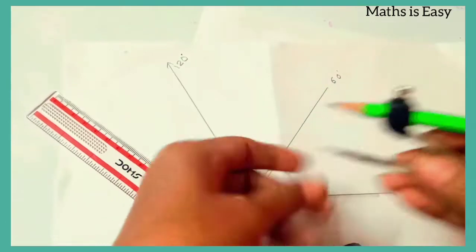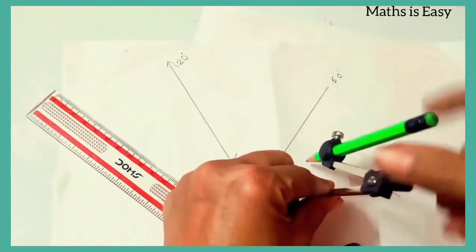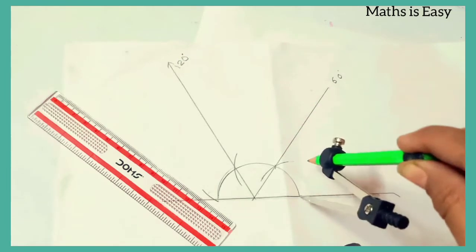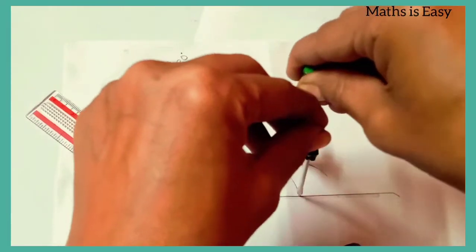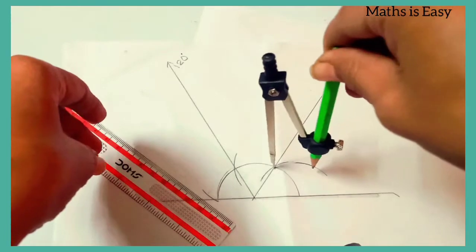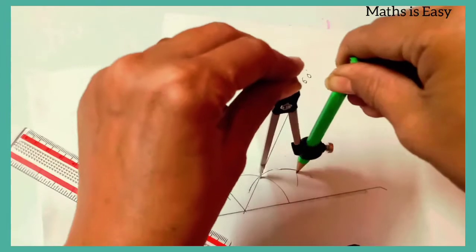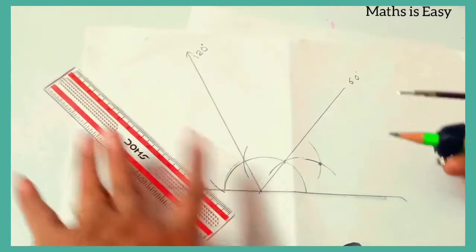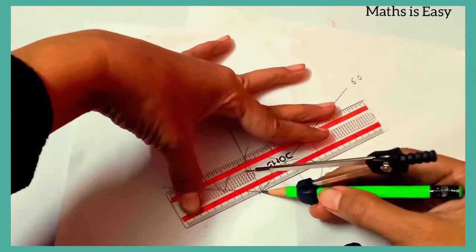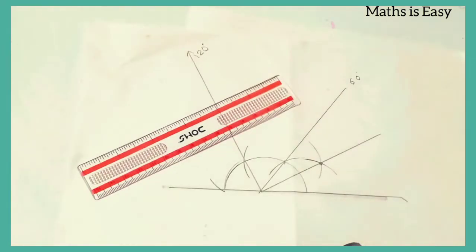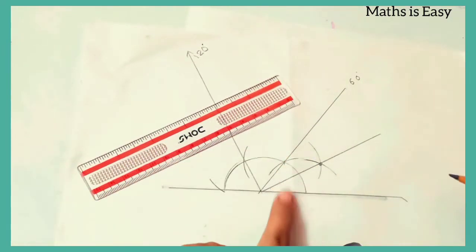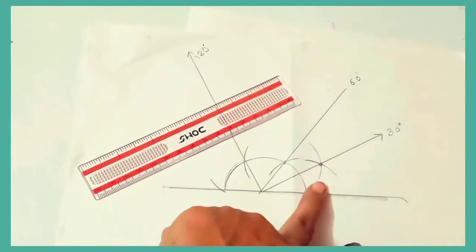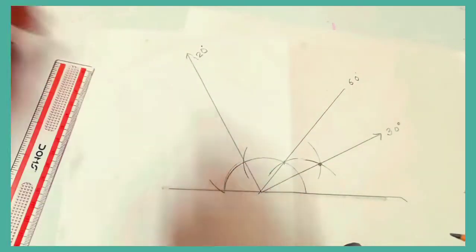This angle is 60 degrees. If we bisect it — and if you don't know how to bisect, watch carefully — take the compass and from one corner of the arc draw an arc upward. Then, keeping the same radius, place the compass point at the second corner and draw another arc upward in the opposite direction. Where they intersect, join that point with the initial starting point. This bisector divides the 60 degree angle into 30 degrees each.